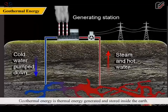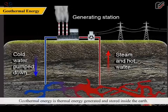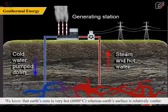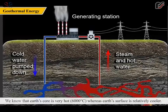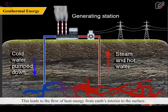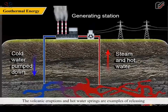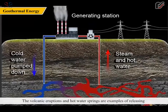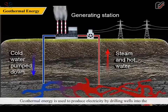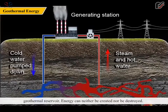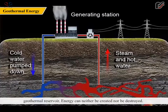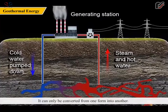Geothermal energy is thermal energy generated and stored inside the Earth. We know that Earth's core is very hot — 6000 degrees Celsius — whereas Earth's surface is relatively cooler. This leads to the flow of heat energy from Earth's interior to the surface. Volcanic eruptions and hot water springs are examples of releasing geothermal energy in large bursts. Geothermal energy is used to produce electricity by drilling wells into the geothermal reservoir. Energy can neither be created nor destroyed; it can only be converted from one form into another.